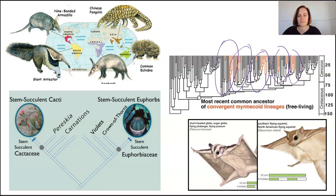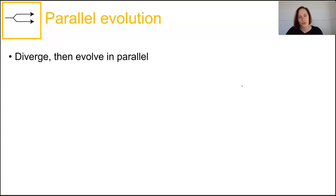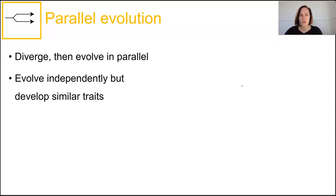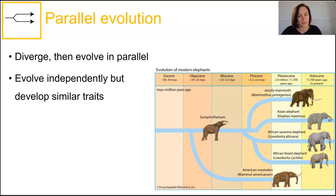Parallel evolution occurs when a divergence occurs in a species and the two new species then evolve independently of one another, but develop similar characteristics, maintaining the same degree of similarity. These are organisms that share a close ancestral history but live in separate yet similar environments. Even though they take their own evolutionary paths, they end up evolving similar traits, and sometimes these examples are really hard to distinguish from convergent evolution, particularly when the ancestral heritage is still up for debate.